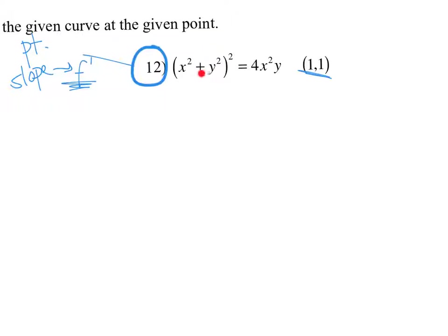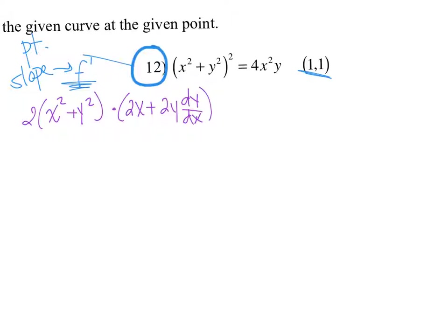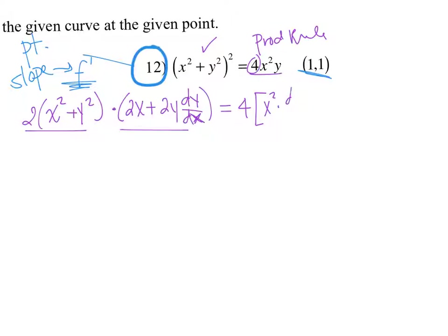So 2(x² + y²) raised to the first, times the derivative of the inside, which is 2x plus 2y dy/dx — as we never derive y without dy/dx. That's the chain rule on that side: d(outer) times d(inside). And over here we have, of course, a product rule. There is a 4 there, so we hold on to that constant coefficient of 4. So 4 times [first · d(second) plus second · d(first)].